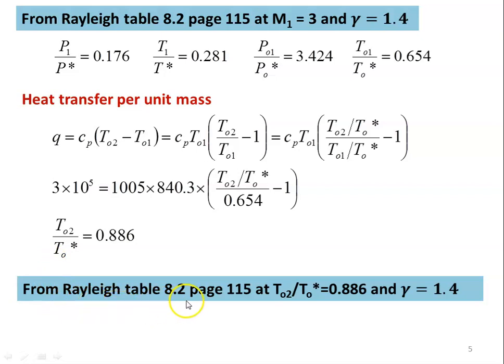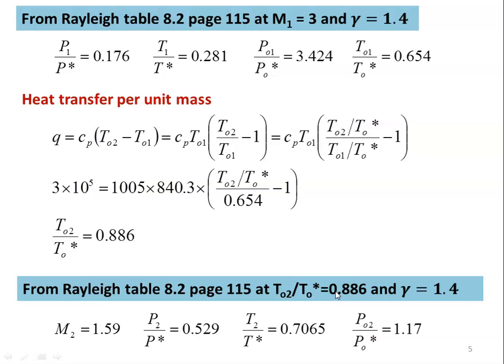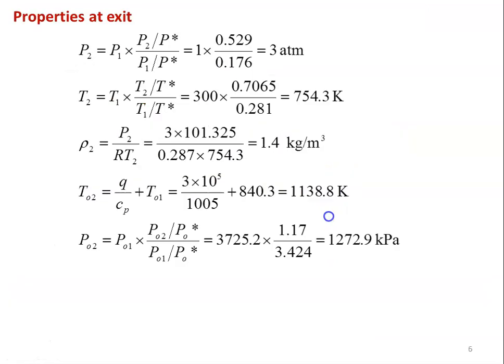Again from Rayleigh table 8.2, page 115, at T02/T0* equal to 0.886 and gamma equal to 1.4, we take: M2 equal to 1.59, P2/P* equal to 0.529, T2/T* equal to 0.7065, P02/P0* equal to 1.17. We then calculate: P2 = P1 × (P2/P*) / (P1/P*) = 1 × 0.529 / 0.176 = 3 atmosphere. T2 = T1 × (T2/T*) / (T1/T*) = 300 × 0.7065 / 0.281 = 754.3 Kelvin.